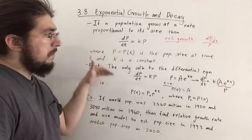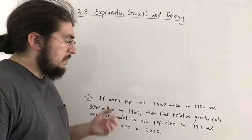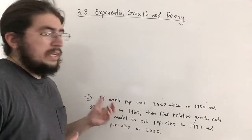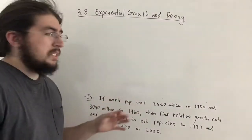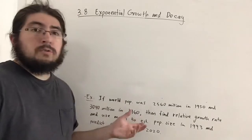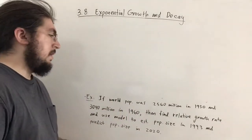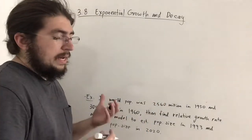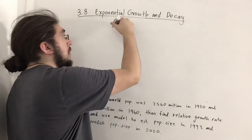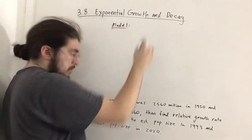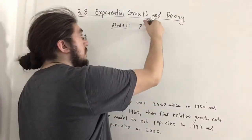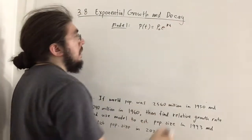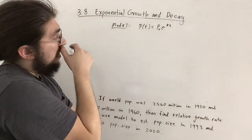I've erased the question to make space for the work. The key assumption in this section is that the population grows proportionally to the size of the population — in other words, it satisfies the differential equation we saw. The model I'm referring to is P(t) = P₀ · e^(kt).